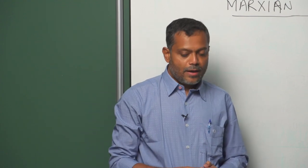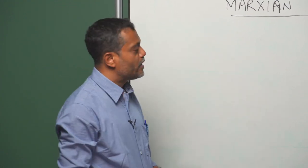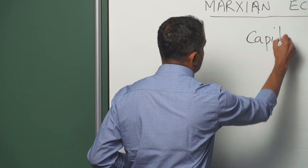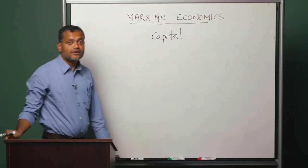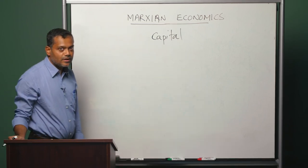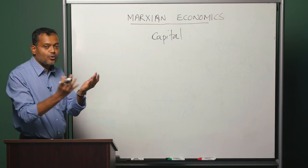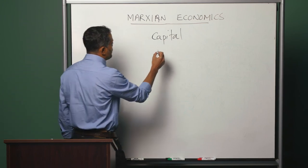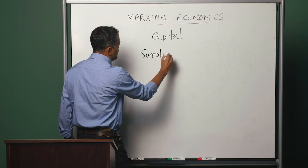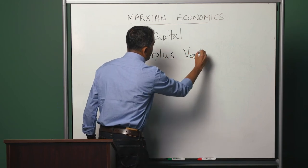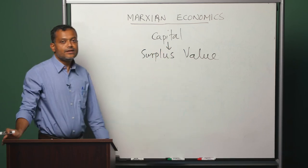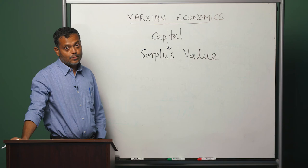The content of Volume 1 of Capital, which we are going to now study, is to understand the notion of capital. How does capital get generated? The generation of capital, or the process of production of capital, can be broken up into the processes of generation and accumulation of surplus value. So to understand capital, we really need to understand the notion of surplus value.